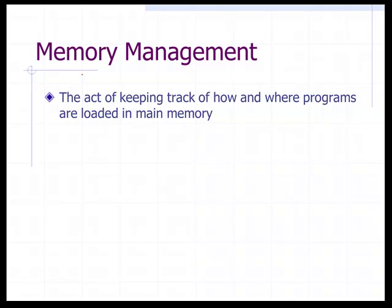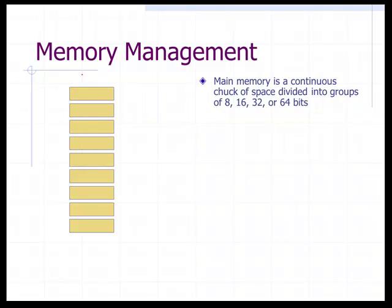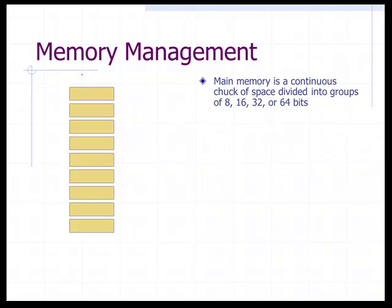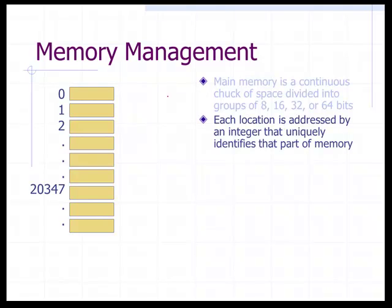Main memory management is the act of keeping track of how and where programs are loaded in main memory. Main memory is represented as a stack of memory locations. Each location is either 8-bit, 16, 32, or 64-bits, with 32-bits being what we usually use.